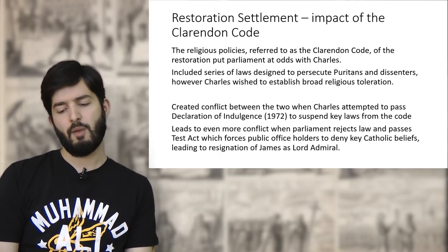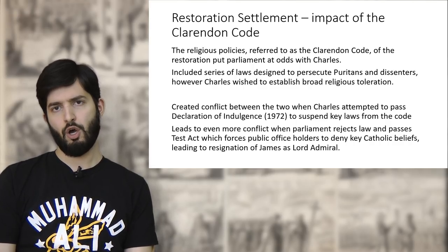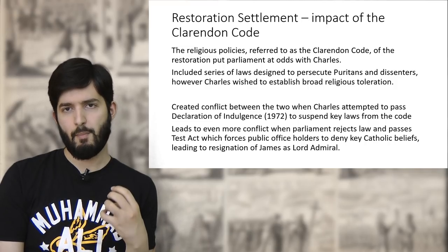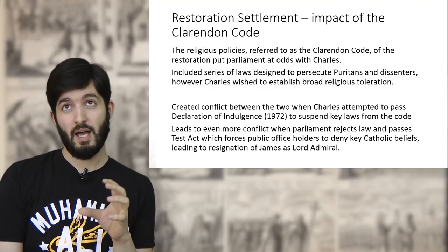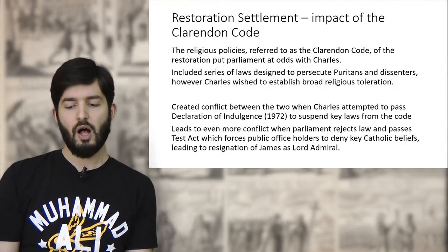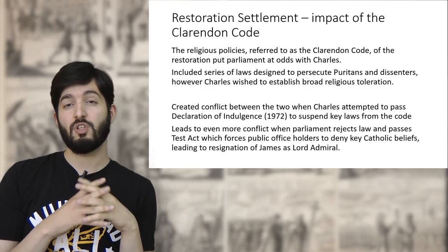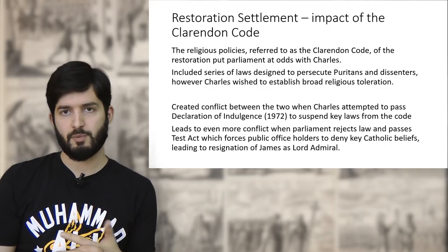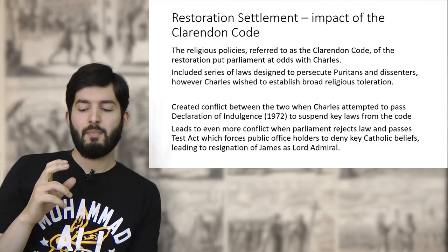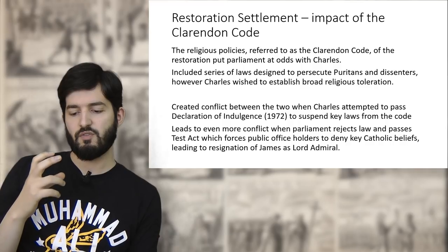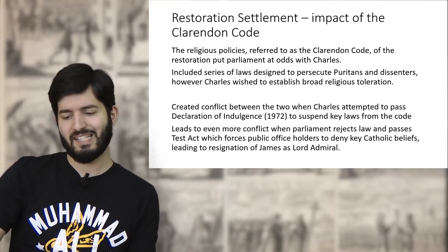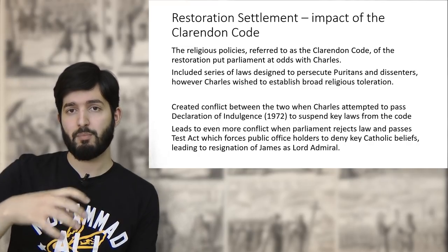The really major problem from the Restoration Settlement is the impact of the Clarendon Code — the set of religious policies that create the most serious problems. The Clarendon Code puts Charles at odds with his Parliament because Charles personally wished to establish broad religious toleration — whether due to secret Catholic tendencies or genuine belief. The Clarendon Code, by contrast, is a series of laws designed to persecute Puritans and dissenters in a very strict and harsh way, gradually expelling them from the church.